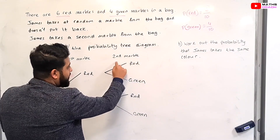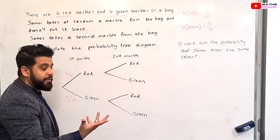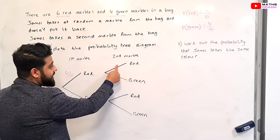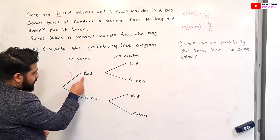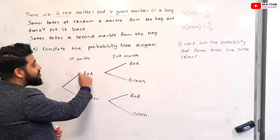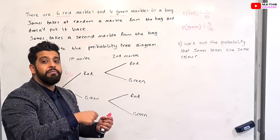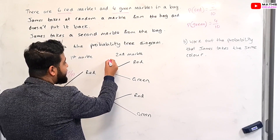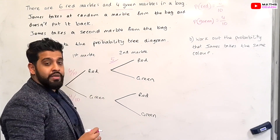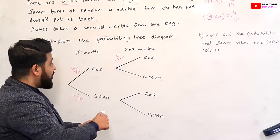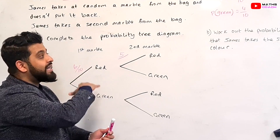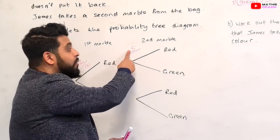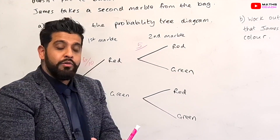Let's start with the second marble. We want to know the probability of choosing a red marble. This red follows on from selecting a red in the first marble — so we've already taken out a red marble from the bag. So now we're not going to have six red marbles; we're going to have one less, which is five red marbles. And the total amount of marbles in the bag — we started with 10. If we've taken a red one already, not only do we have one less red, but we also have one less from the total.